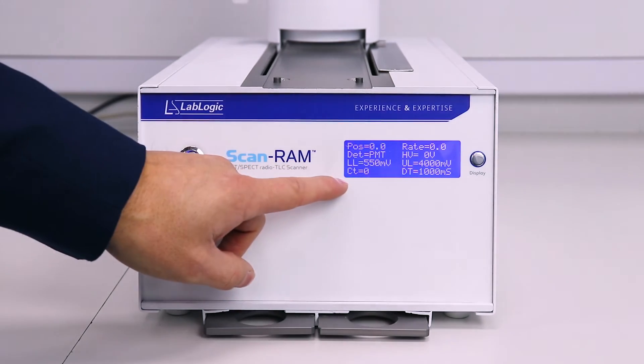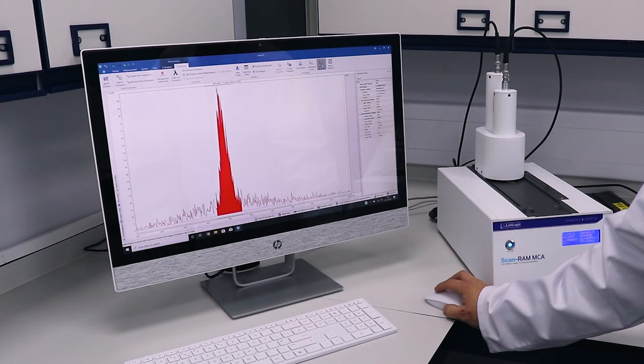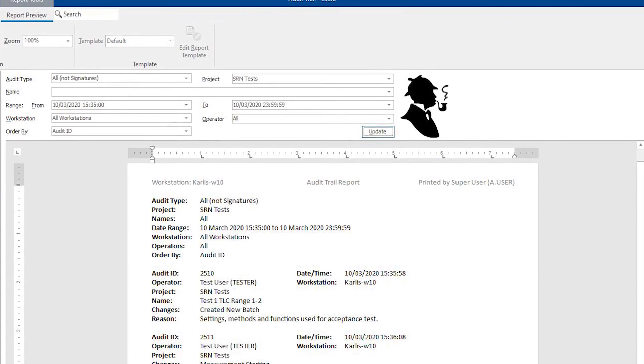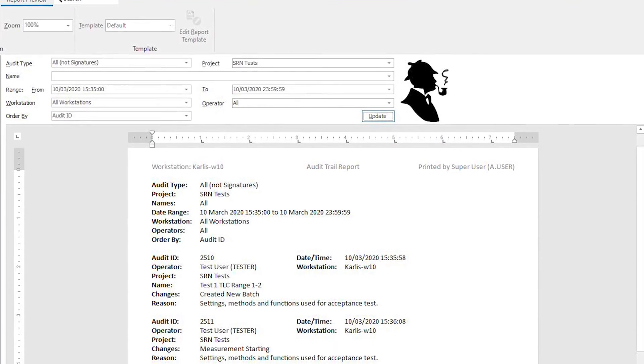On the front-end display you can easily view the instrument and the run parameters. You cannot physically change any settings on the instrument. This has to be done using Laura software with a full audit trail which records what was changed, who made the change and when.